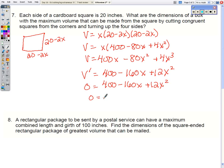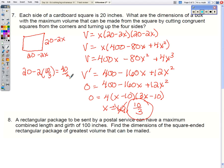And we're going to set that equal to 0. And factor. Now all of these have a 4 in common. And when I set each factor equal to 0, I get either 10 or 10 thirds. But 10 is physically impossible because that will leave us with no cardboard. So x is 10 thirds.